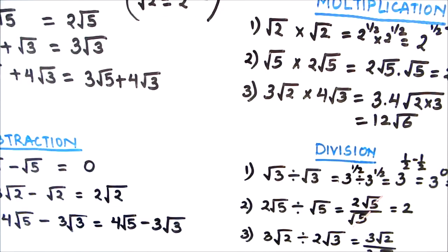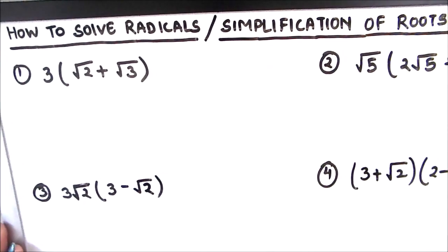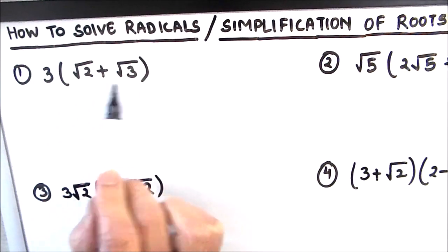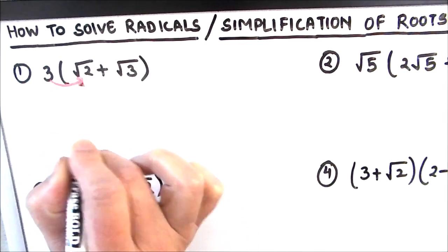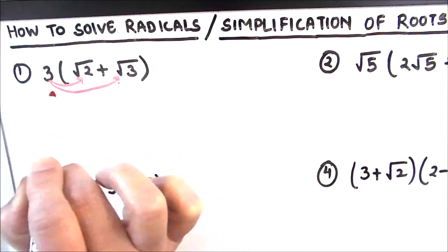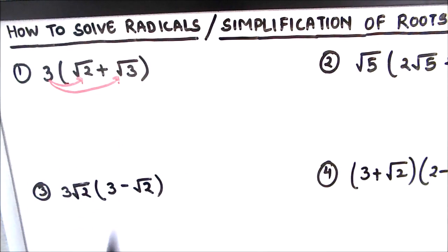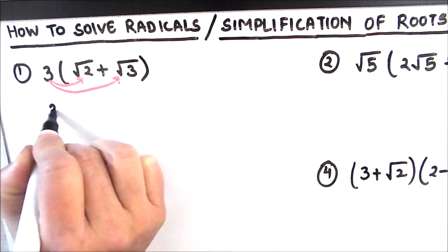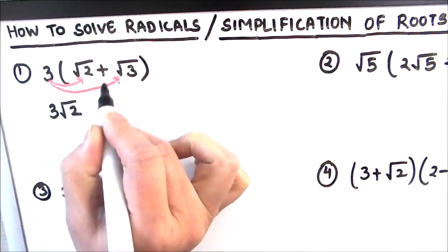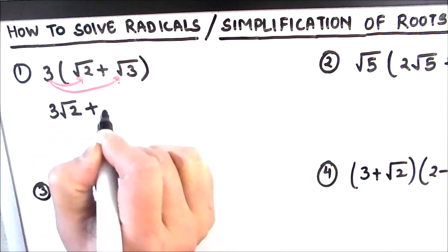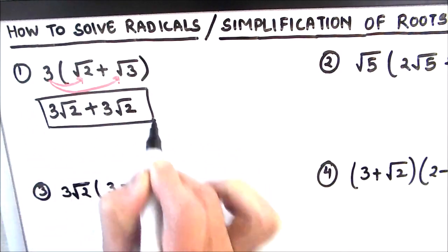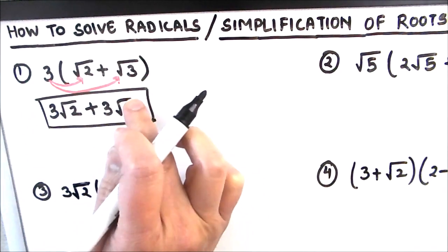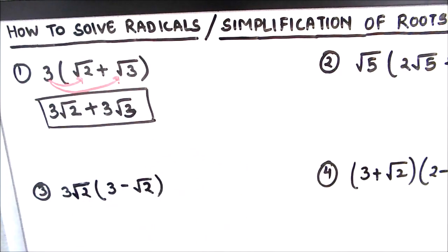Let us now solve a few questions to understand these rules clearly. The first example is 3 times the quantity root 2 plus root 3. We multiply both numbers inside by the outside number 3. First 3 times root 2, then 3 times root 3, keeping the plus sign in between. This gives 3 root 2 plus 3 root 3. Since the numbers inside the roots are different, we cannot simplify further — this is our final answer.